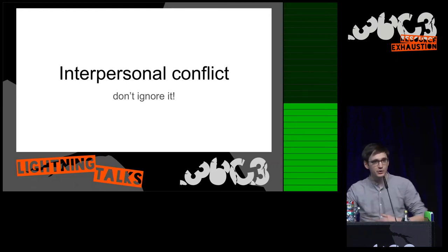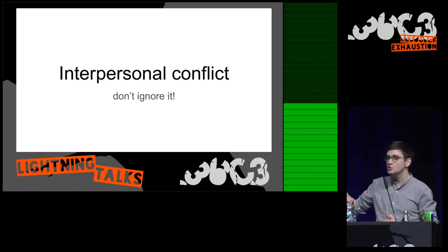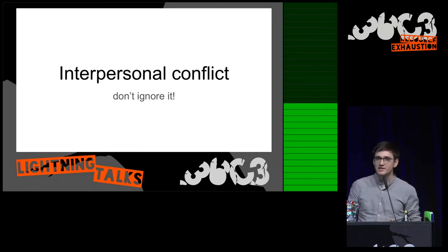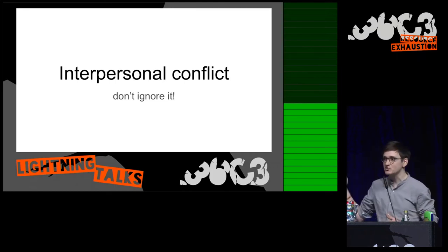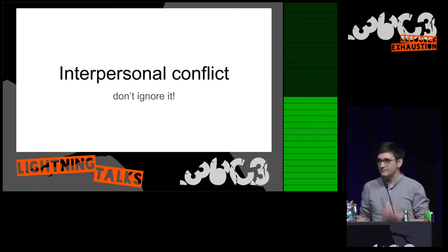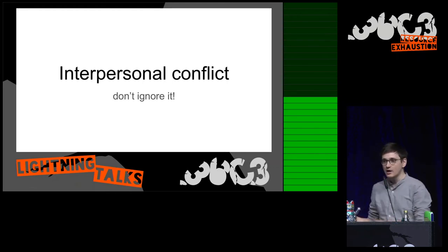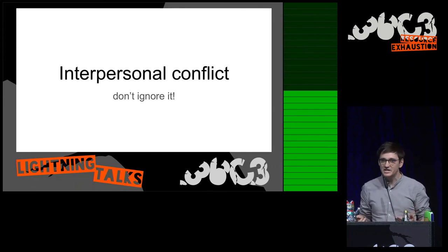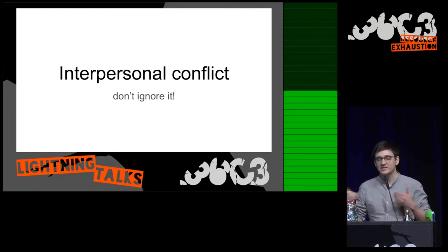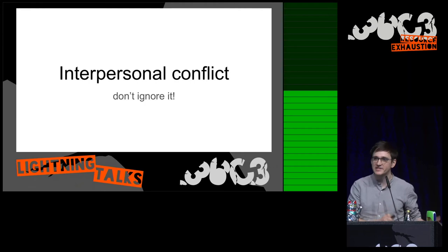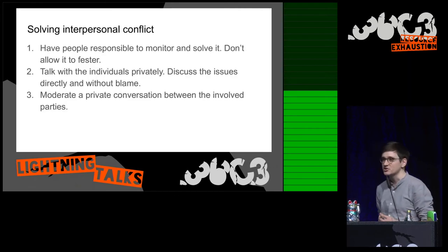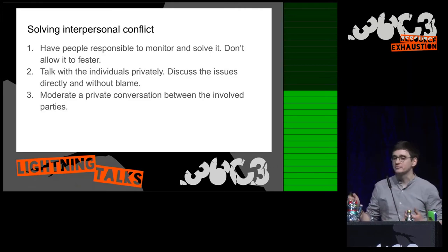The second thing is interpersonal conflict. This is a big issue in communities and one of the main reasons why communities explode. We as human beings have a natural tendency to try to ignore interpersonal conflict as long as it doesn't involve us ourselves. But this is a really bad thing, because we hope that interpersonal conflict will solve itself, but it almost never does.